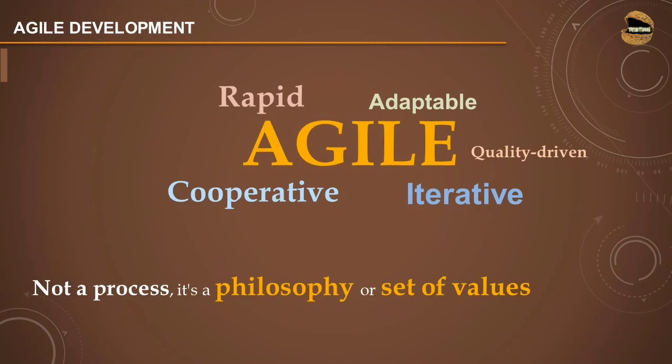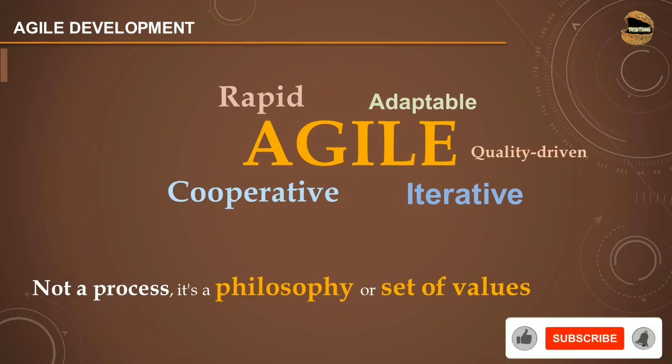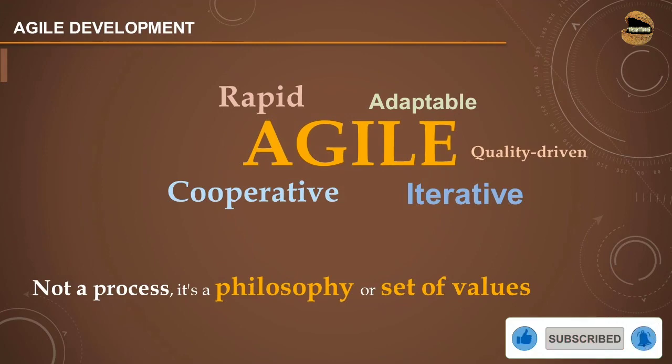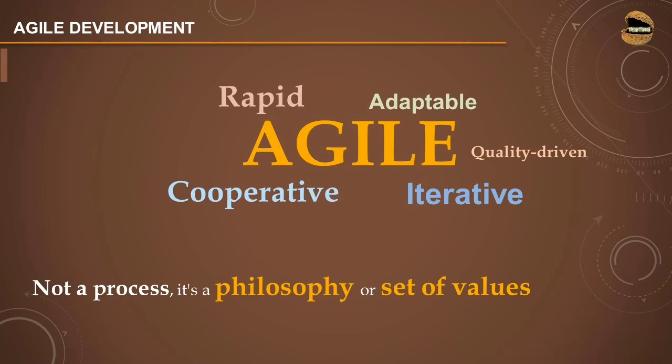Agile is about being rapid, adaptable, quality driven, iterative, and cooperative. It has a lot of principles and a big manifesto to understand. If you understand the manifesto and the principles, you understand how Agile works in the industry. It is not just a process — it's a philosophy or set of values which we follow in Agile methodology.